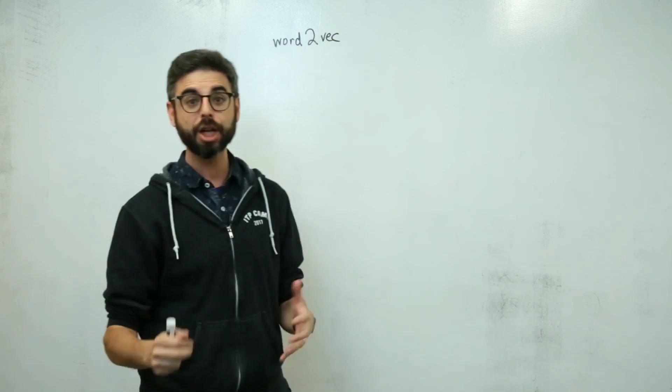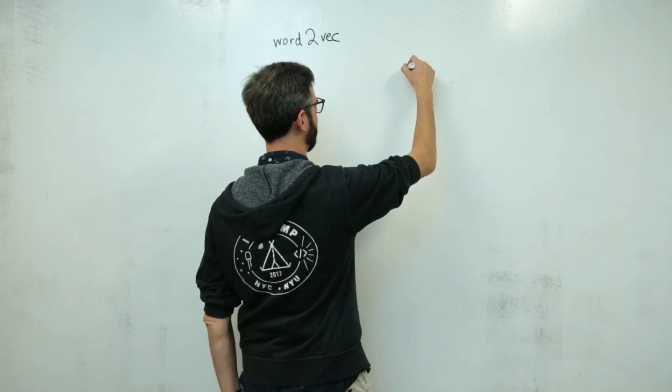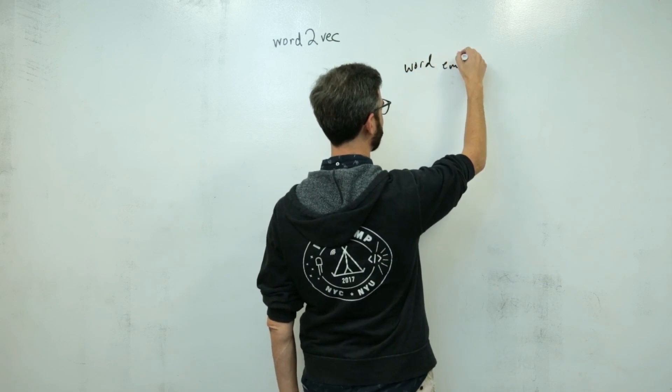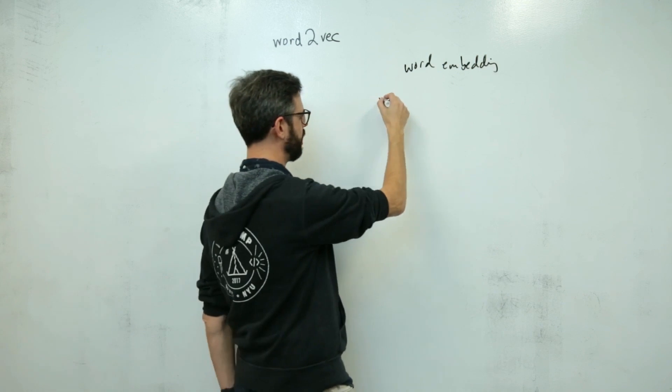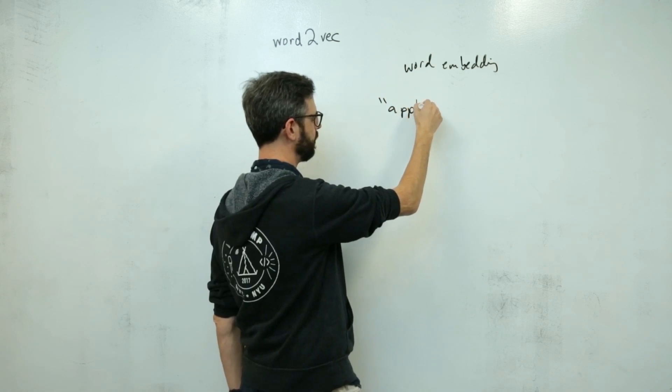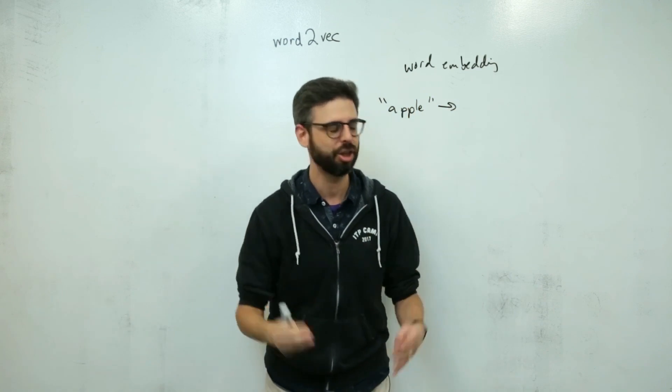Word2Vec is a particular machine learning model that produces something called a word embedding. That's a very, very fancy term. And what it means is that any given word, like apple, can be associated with numbers, a vector.